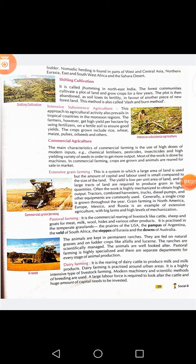Intensive subsistence agriculture: this approach to agricultural activity prevails in tropical countries, in the monsoon regions. Farmers get high yield per hectare by using fertilizers on fertile soil to ensure good yields. The crops grown include rice, wheat, maize, pulses, oilseeds and others.